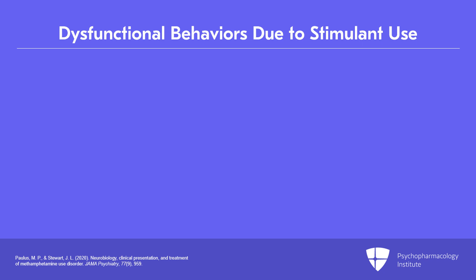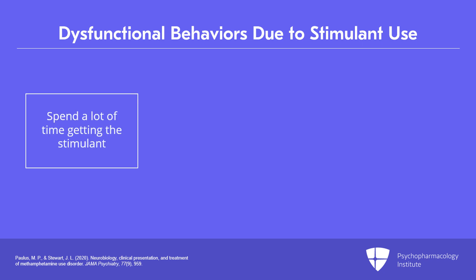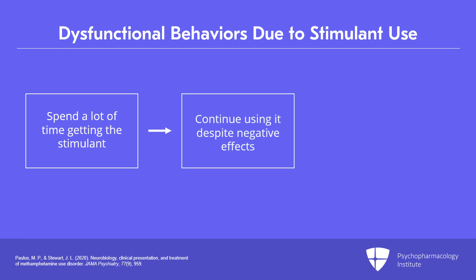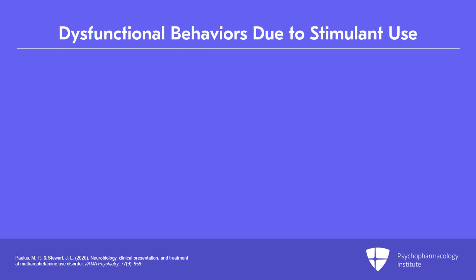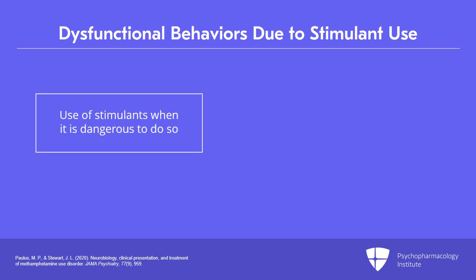In the area of dysfunction, people often have to spend a lot of time getting the stimulants, meaning they give up their other activities. They continue using despite negative effects — commonly stimulants cause insomnia and people become sleep deprived yet still continue using. When the substance use disorder gets severe, people are not able to do what they need to do like work, go to school, or do childcare. It's also very common for people to use stimulants when it's dangerous, such as driving under the influence.